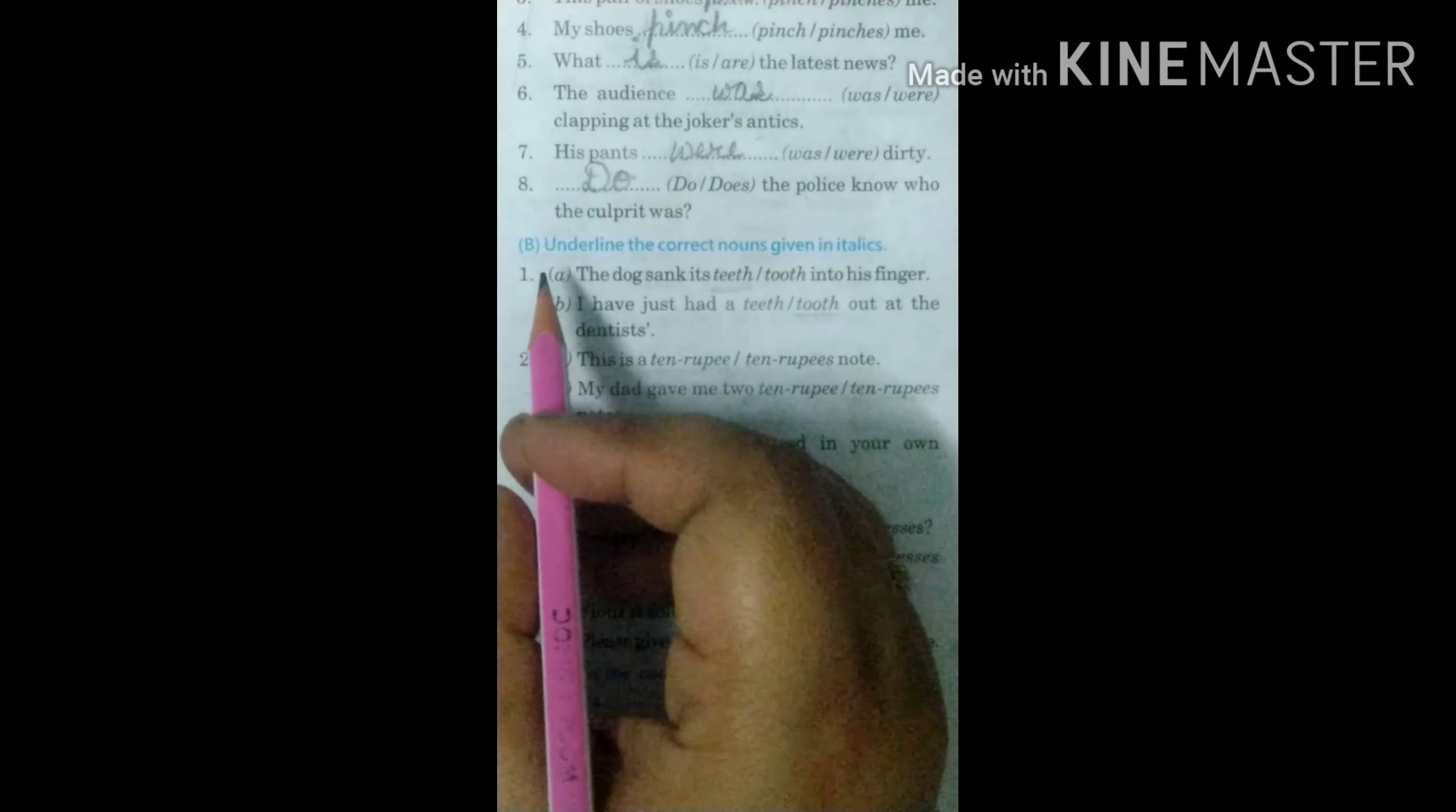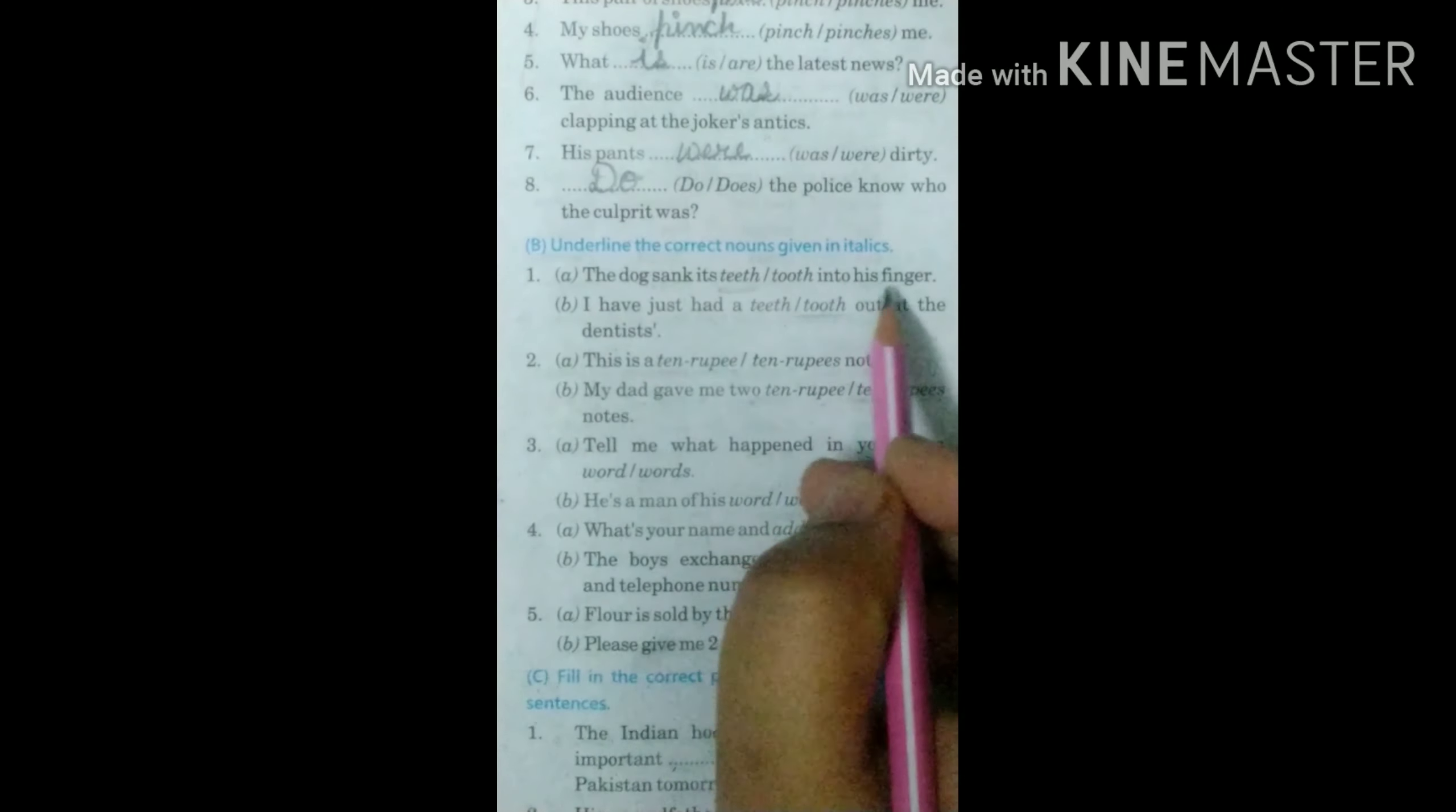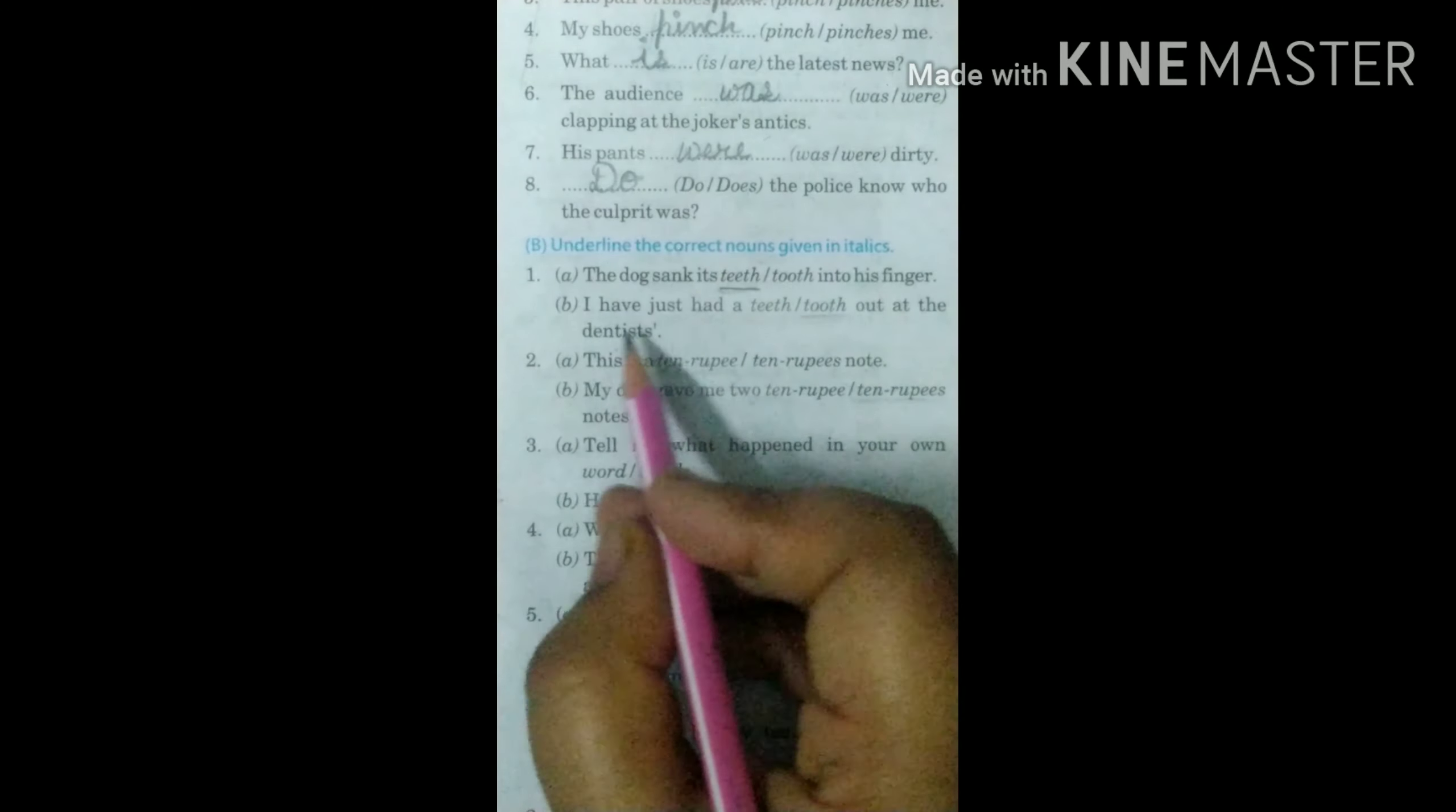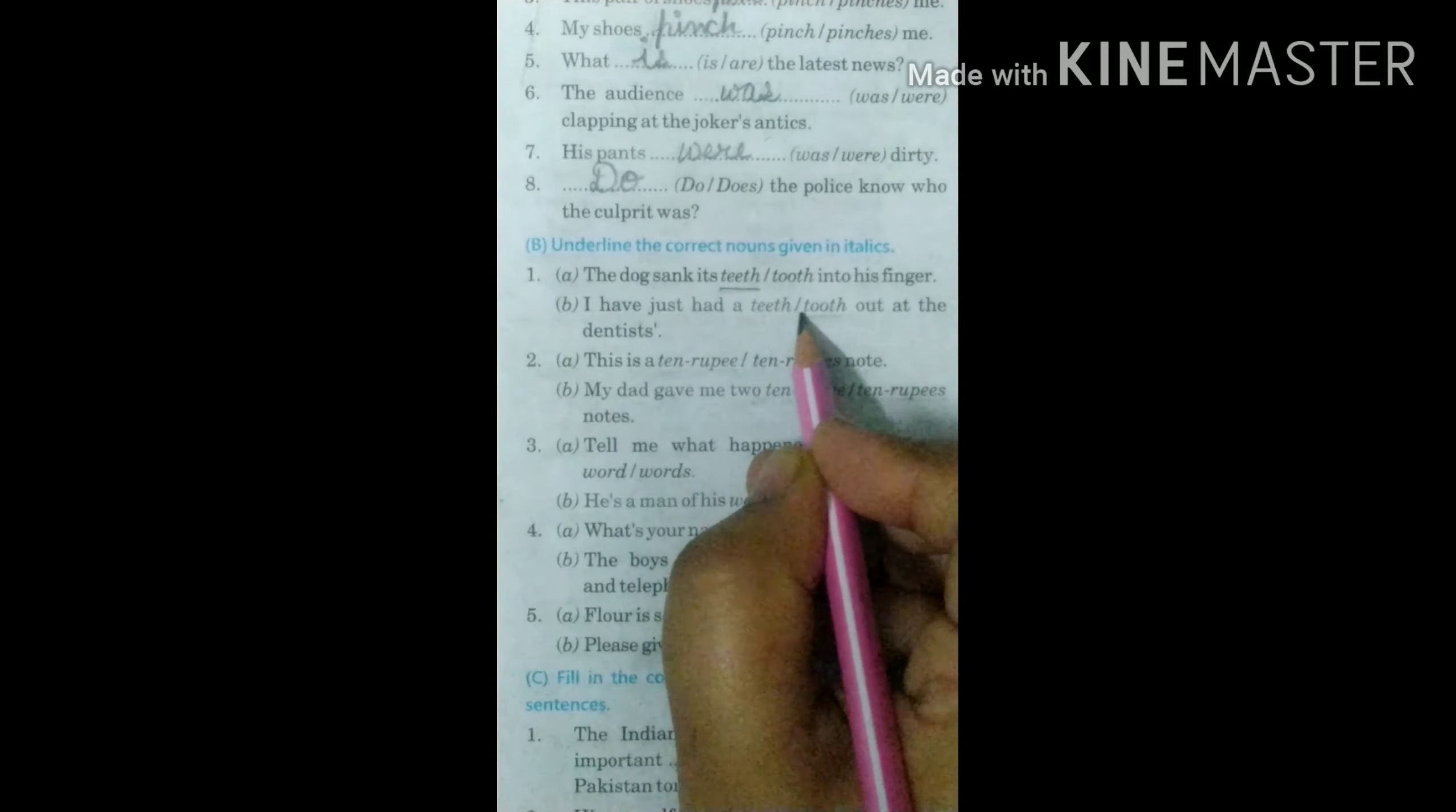Children, let's do B part. Underline the correct nouns given in italics. The dog sank its dash into his finger. Its teeth. Teeth is the plural of tooth. Second is I have just had a dash out at the dentist. A tooth.